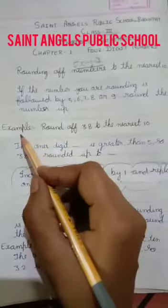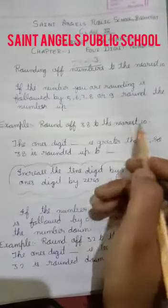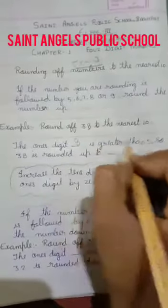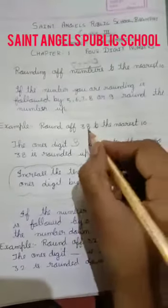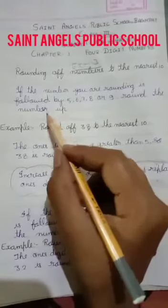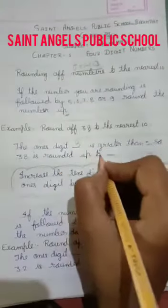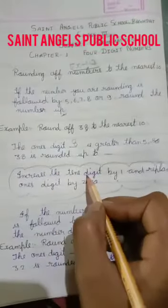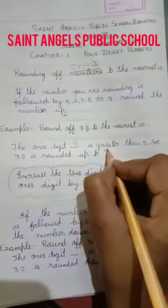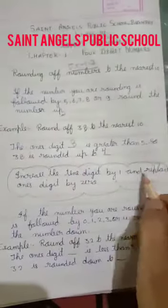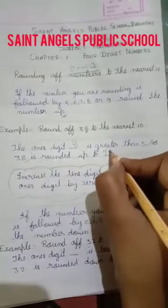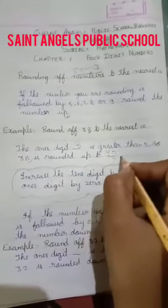Now let's take an example. Round 38 to the nearest 10. The 1's digit is 8, which is greater than 5. So 38 is rounded up. If you have greater than 5, then your number rounds up. Increase the 10's digit by 1 — add 3 plus 1 is 4 — and replace the 1's digit by 0. So 38 is rounded up to 40.